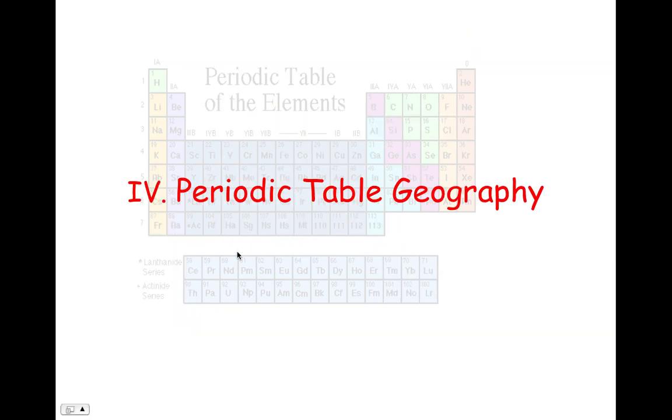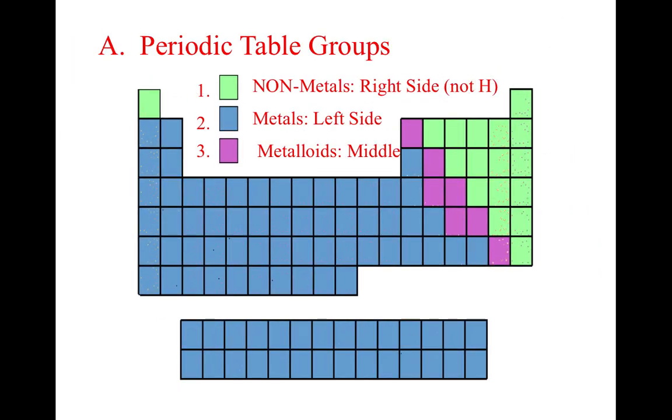Roman numeral number four is Periodic Table Geography. We're going to start with our Periodic Table groups. We separate our Periodic Table into three major categories: non-metals on the right-hand side in green, including hydrogen; metals all the way over on the left-hand side and bottom in blue, other than hydrogen; and metalloids that walk that stair step down the middle. Metalloids pretend to be both metals and non-metals, depending.